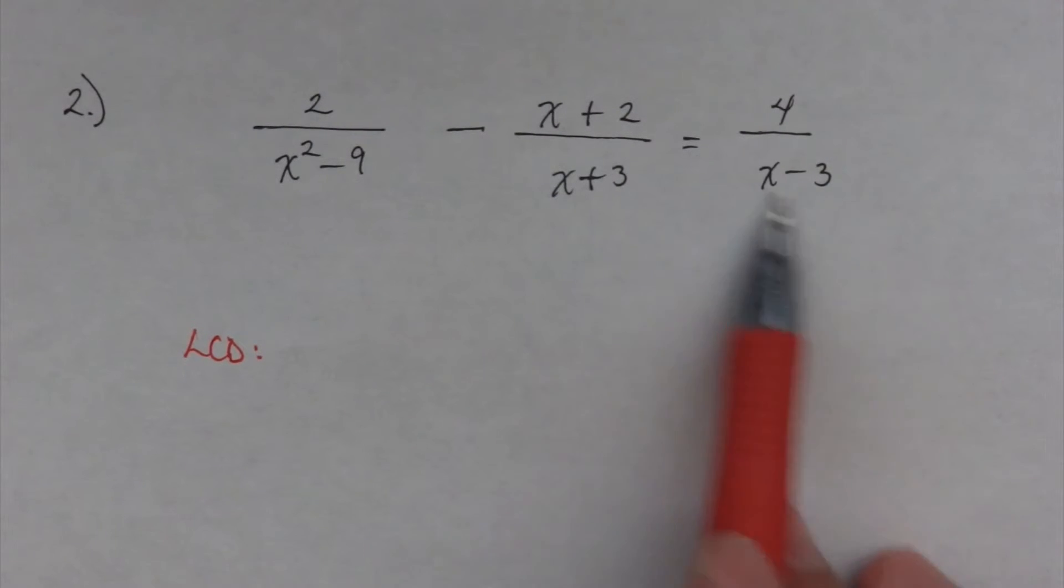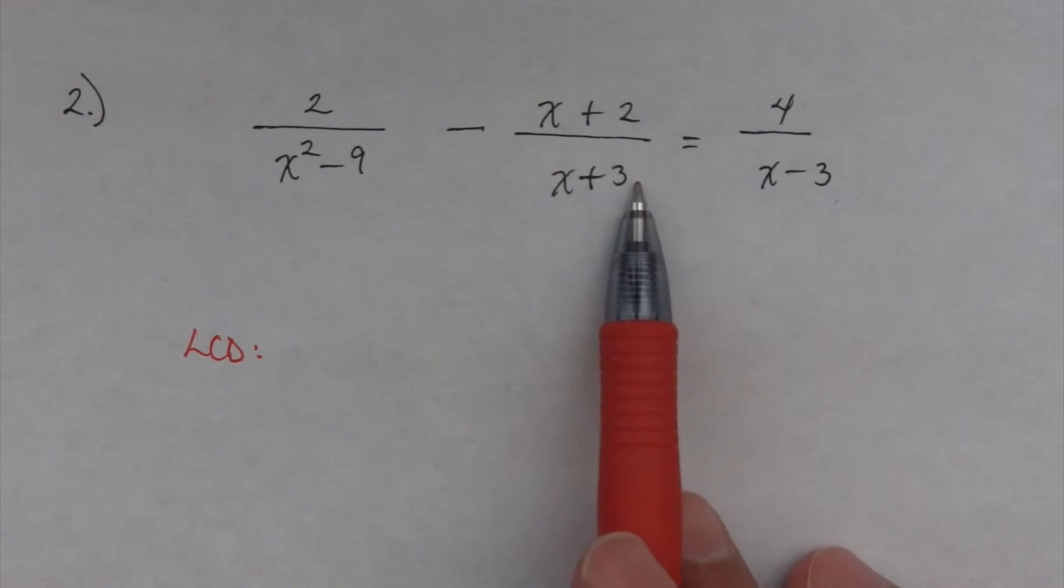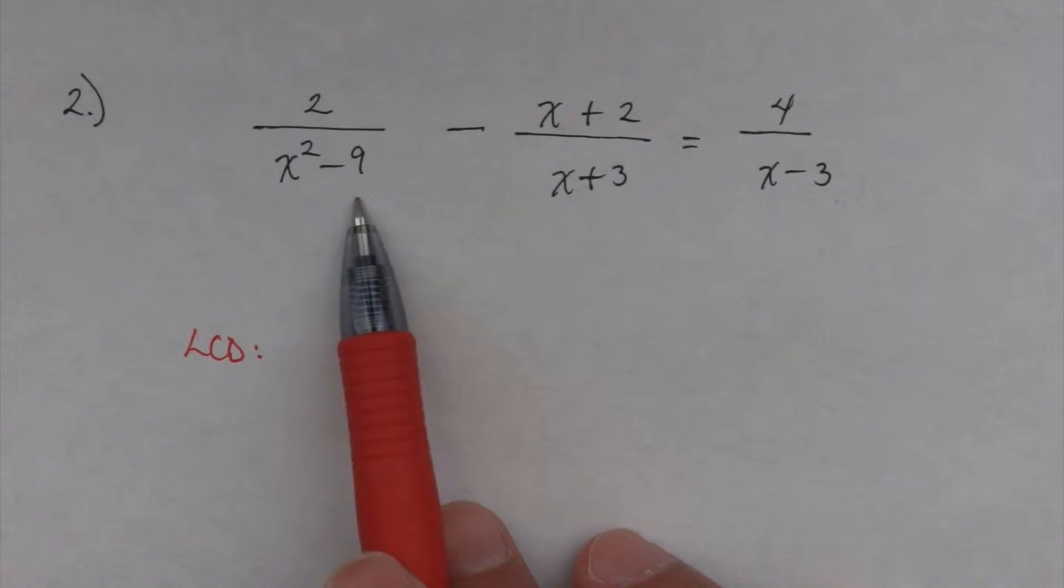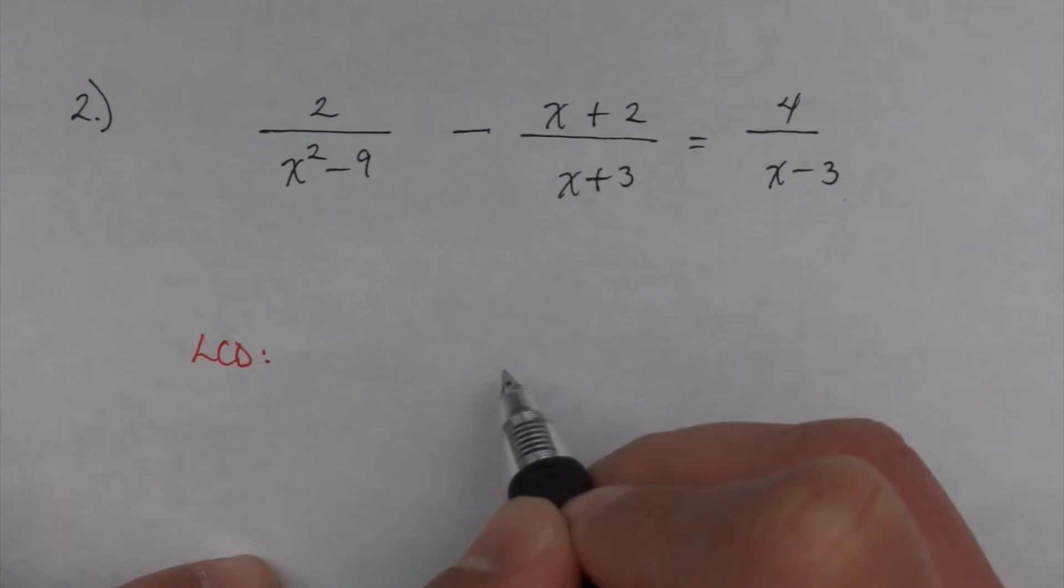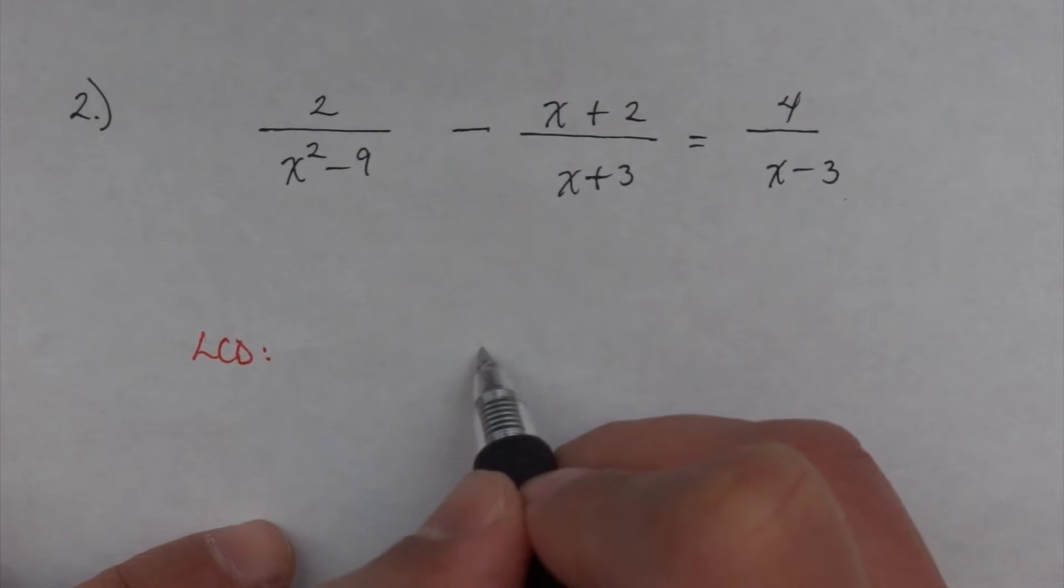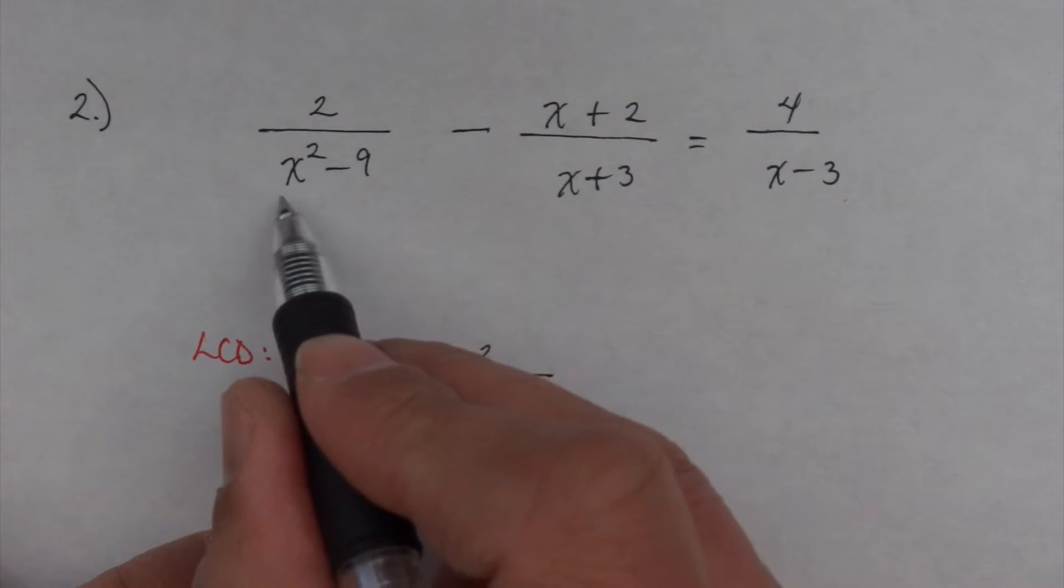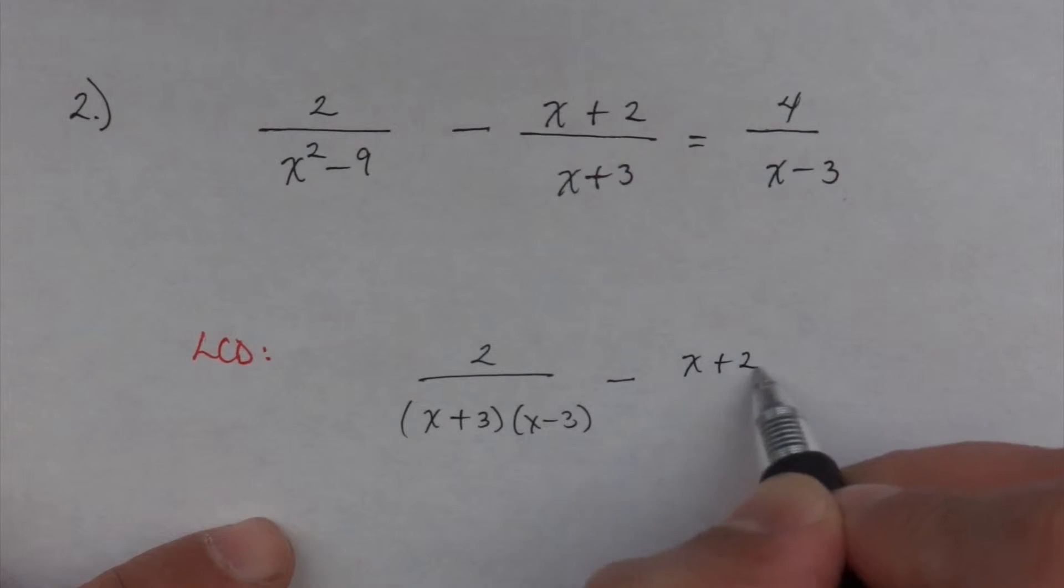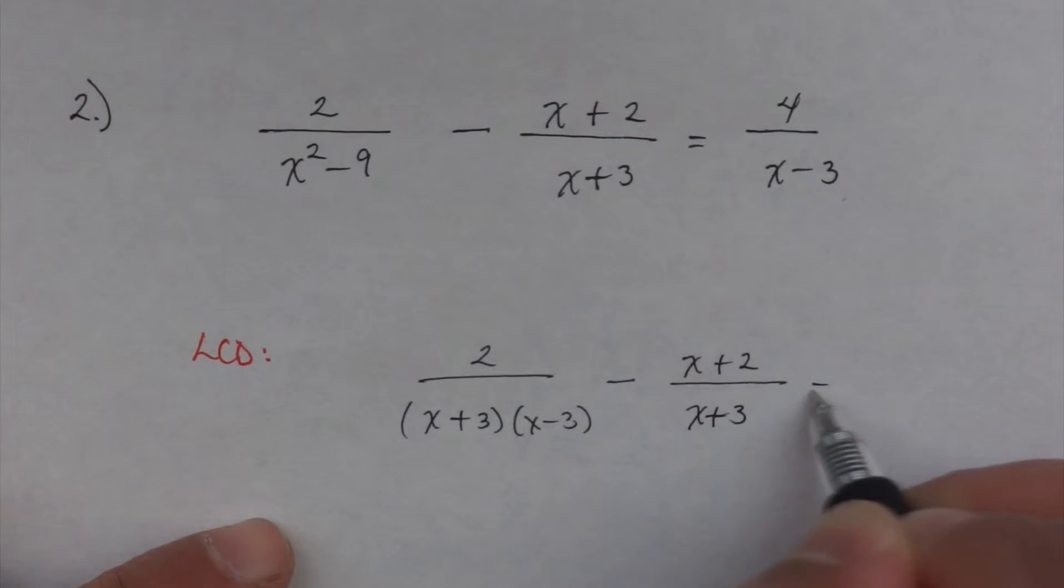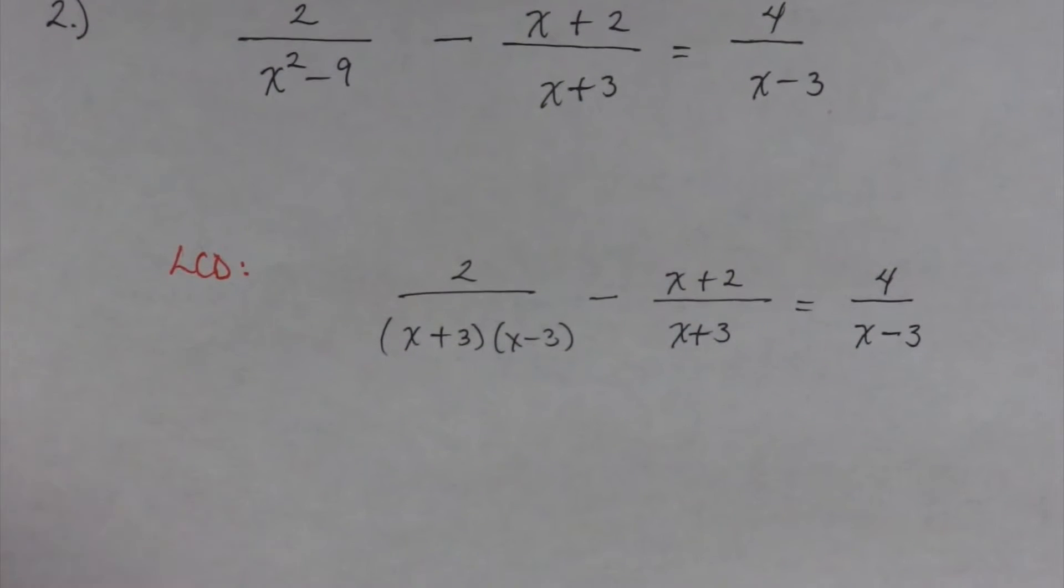We need to go ahead and find our LCD. But there's a problem here. This guy is pretty much simplified. This guy is a binomial square, so I need to go ahead and see what this guy looks like in order to figure out what I'm working with. Let me go ahead and just bring this down. Hopefully you remember how to factor. This is a binomial square, so this becomes x + 3, x - 3.